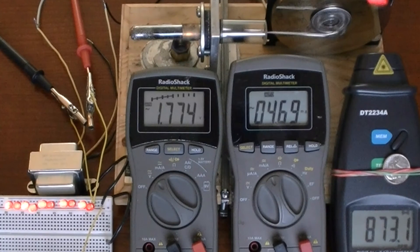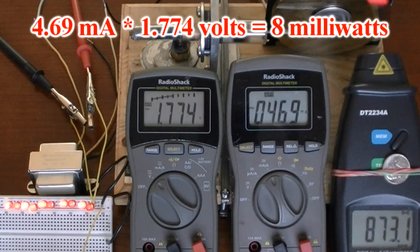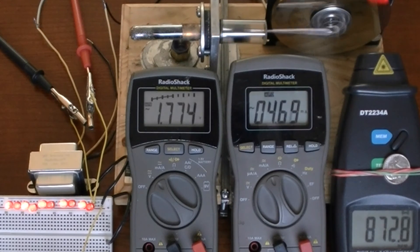There it is topping out at 873 RPMs. That produces 4.69 mA at 1.77 V, which is roughly 0.008 W or 8 mW. I should be able to get more power out of this engine with some more experimenting.